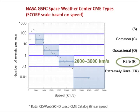The next type of CMEs are those with a speed between 1200 and 1800 miles per second. On average, CMEs with speeds in this range occur less often than once per year, and so we call them R-type for rare.